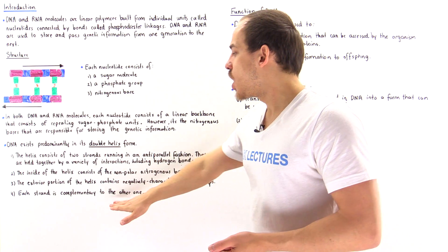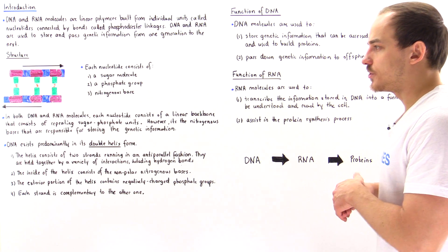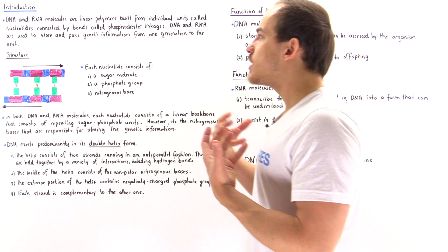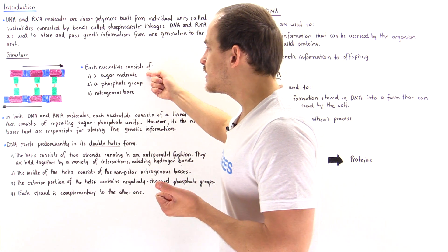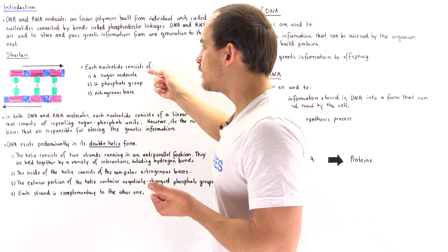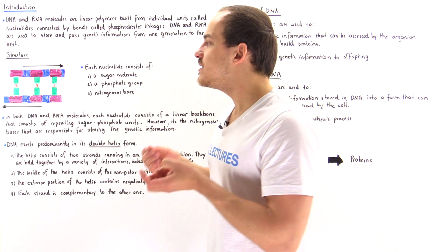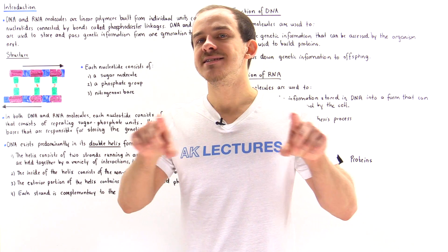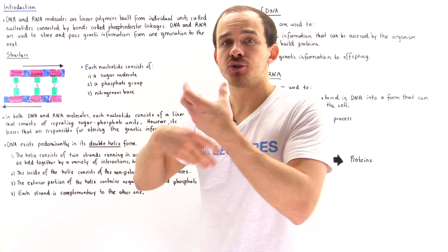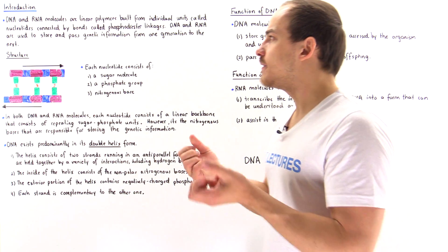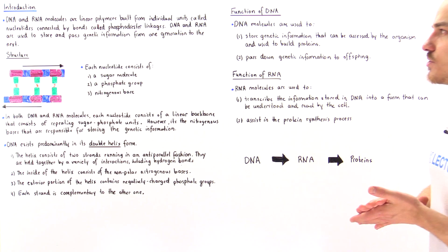These two strands are complementary with respect to one another. Now what about RNA molecules? Because RNA contains a slightly different sugar molecule, it doesn't form the double helix. RNA exists predominantly as a single strand, but it can also intertwine and fold to form different types of secondary and tertiary structures.